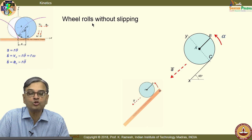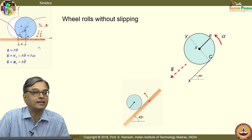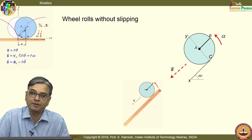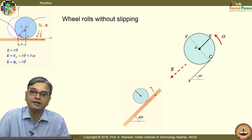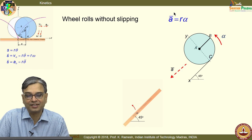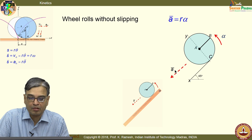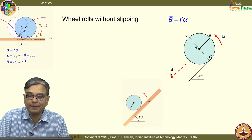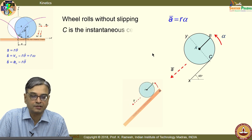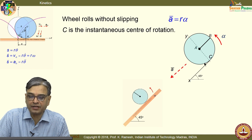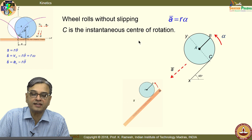When the wheel rolls without slipping, those kinematic quantities apply. The important relation is that mass point acceleration equals r times alpha. With the axis labelled as x and y, we can label the acceleration as A_x. From the physics of the problem, C is the instantaneous centre of rotation. So we can apply the centre of rotation C as the reference point for all computations, making the solution fairly simple.